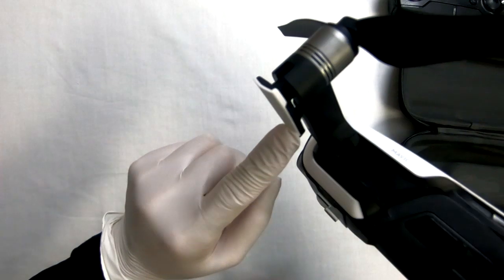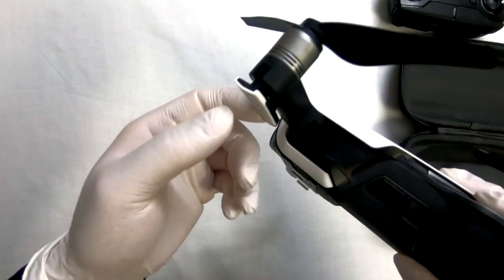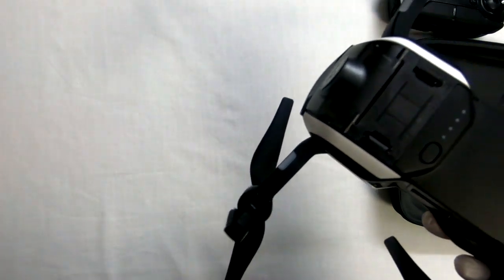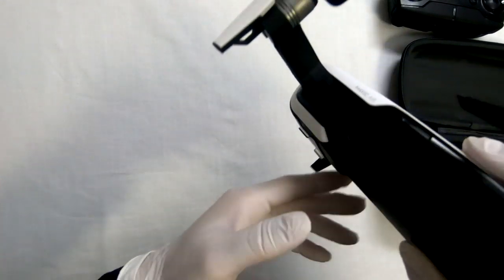And don't forget to flip out the little legs on the front. They'll ensure that you have enough ground clearance for the camera, otherwise the camera might be hitting the ground. Secondly, those little legs are the antennas.